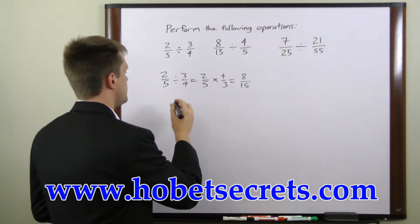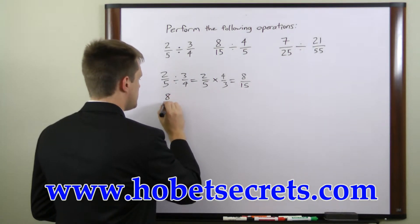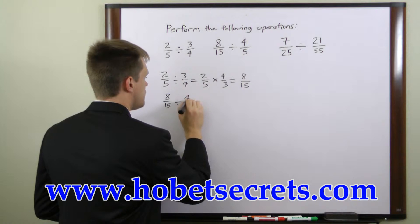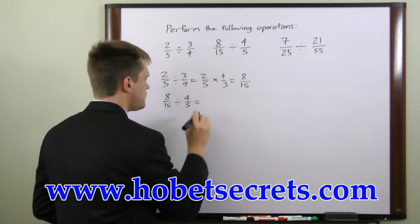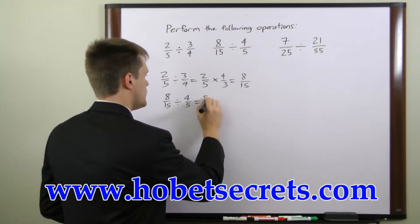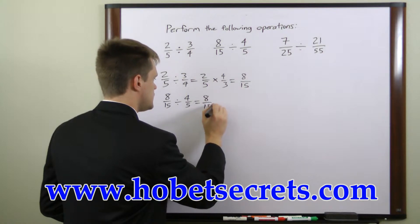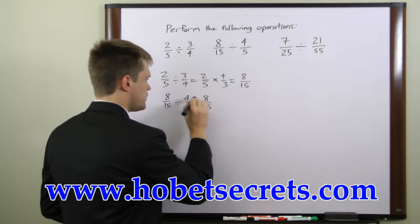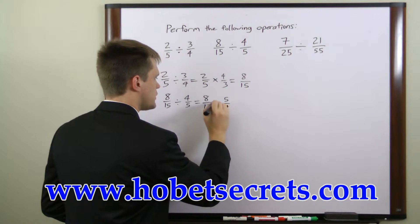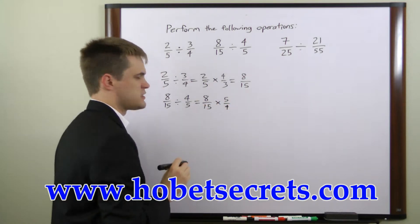Let's take another example. Eight over fifteen divided by four over five. Once again we can rewrite the first fraction and then take the reciprocal of the second fraction, five over four, and change this to a multiplication sign.